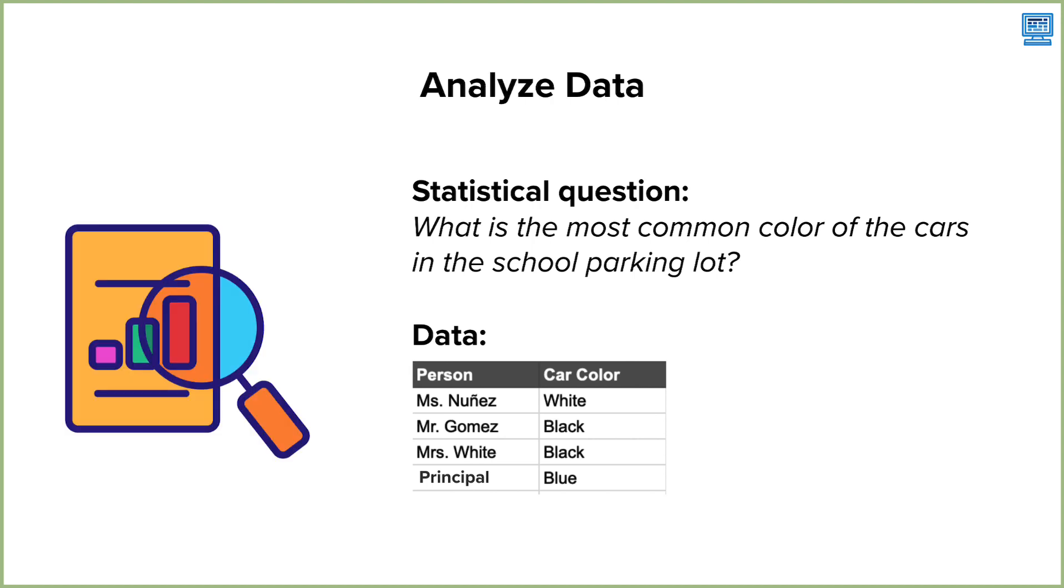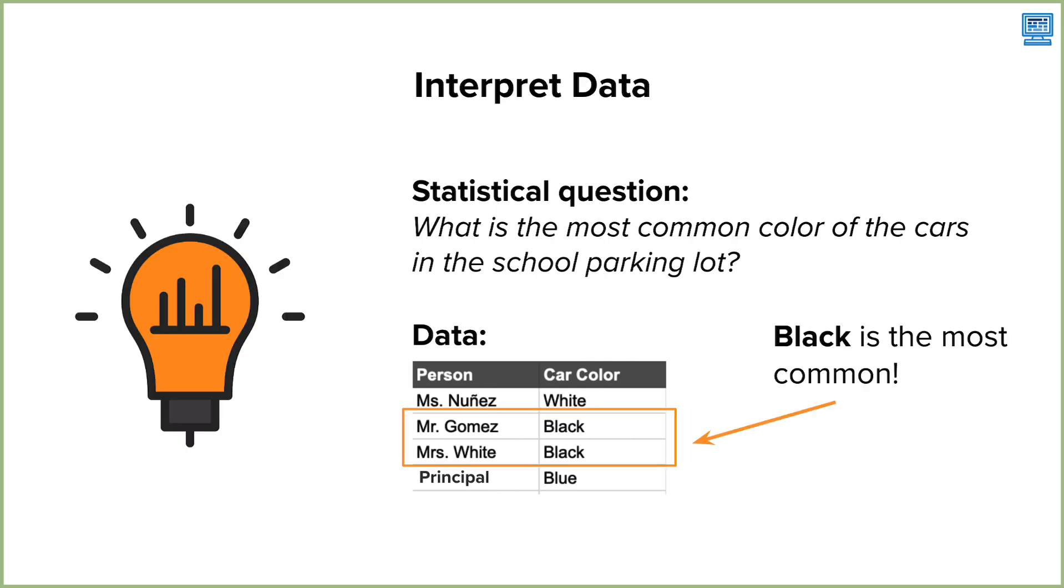Now that we have our data, we can move on to analyzing the data. The data in this example is actually pretty small so we can actually just analyze it by looking at it and counting the values. So you can see that black is the most common car color in the school parking lot.